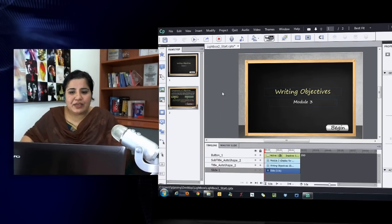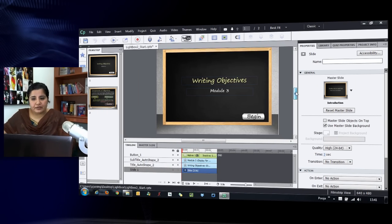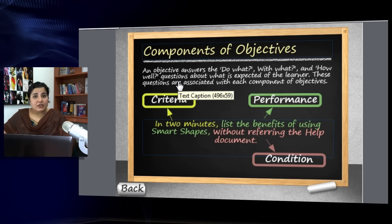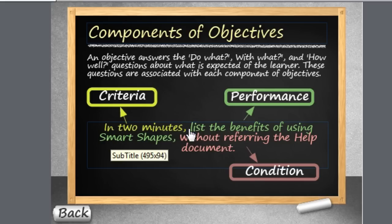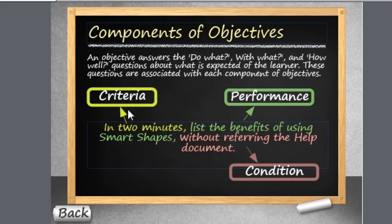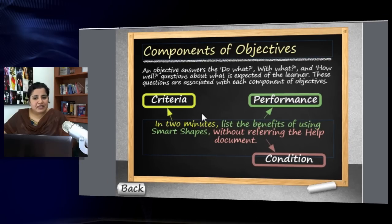In the last video I showed you how to add a single lightbox to your course to make your screen interactive. In this video, let's take a look at a screen when you want to add more than one lightbox to explain certain stuff. Here I have a course on writing objectives, and on this particular screen I am talking about components of objectives — criteria, performance, and condition — shown through an example objective.